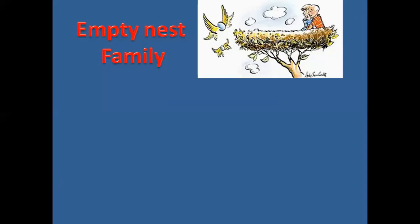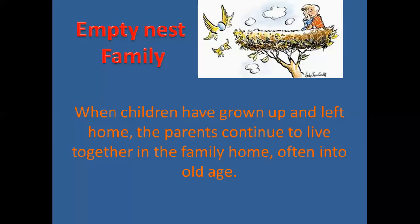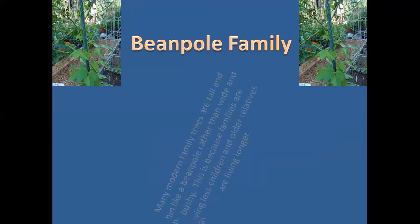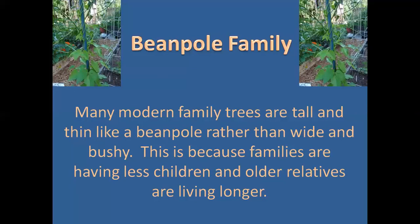The empty nest family is when children have grown up and left the home — gone to university or moved out — so the children have flown the nest. The parents continue to live together in the family home, often until old age. Finally, the beanpole family describes how family structures have changed: in the past, families had lots of children so the family tree was wide and bushy, whereas today families have far fewer children and older relatives live longer, making the family tree tall and thin like a beanpole.